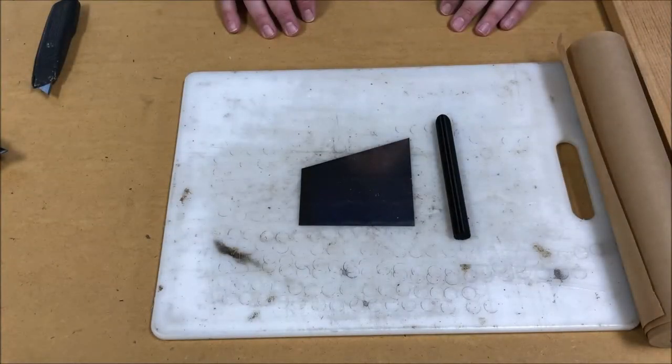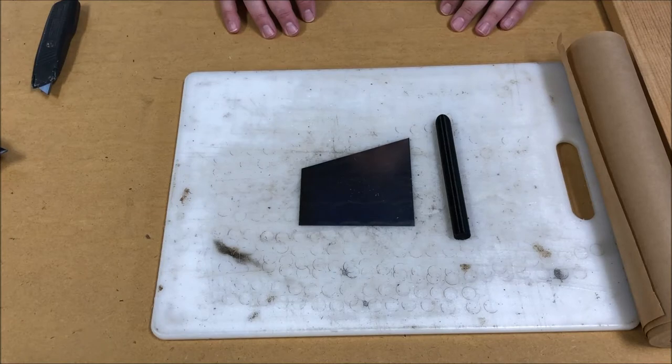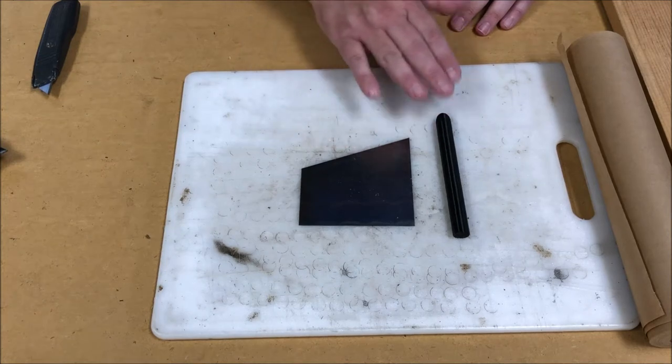In this video, we're going to demonstrate how to make the US 1862 expanding ball cartridge using the Fourth Armory template and former.